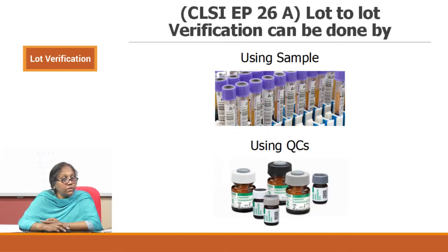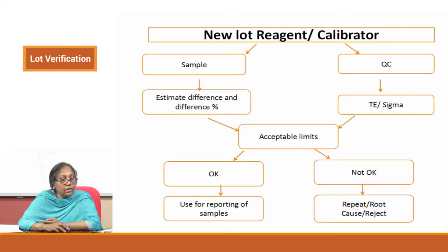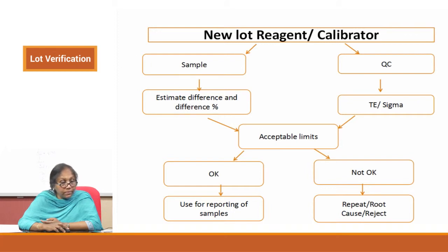We will talk about both these processes because CLSI has explained this in EP26A: lot-to-lot verification can be done using samples or using quality controls. For the sample method, after you run the test you estimate the difference or percentage difference between the runs and judge acceptability. If acceptable, you can use it for reporting. If not, you have to repeat and find the root cause, or if it is not working at all, you reject that lot.